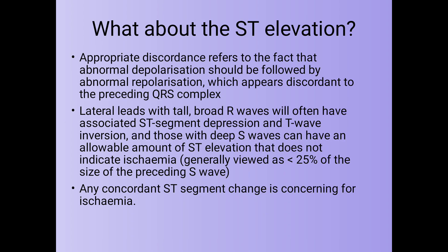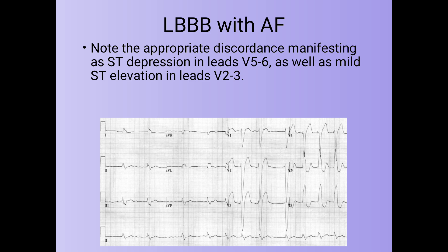Regarding ST elevation: appropriate discordance refers to the fact that abnormal depolarization should be followed by abnormal repolarization, discordant to the preceding QRS complexes. The lateral leads with tall R waves will often have associated ST segment depression and T wave inversion, and those with deep S waves can have an allowable amount of ST elevation that does not indicate ischemia — generally less than 25% of the size of the preceding S wave. Any concordant ST segment change is concerning and may suggest ischemia. In the ECG we can see appropriate discordance as ST depression in V5 and V6, and mild ST elevation in V2 and V3.